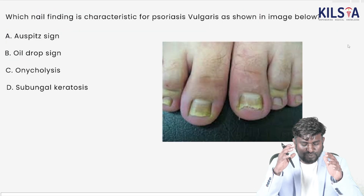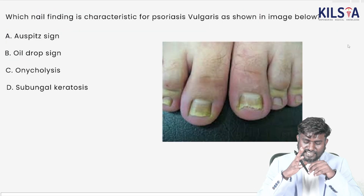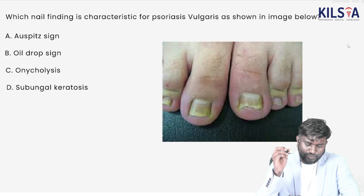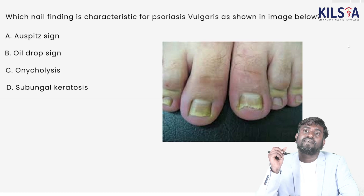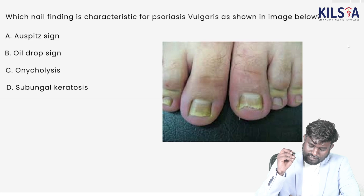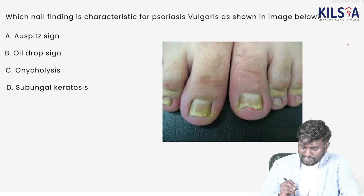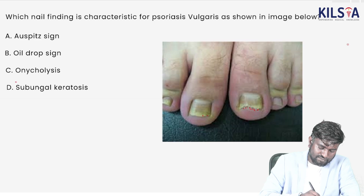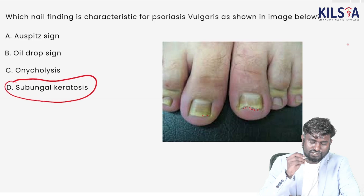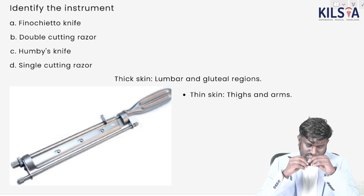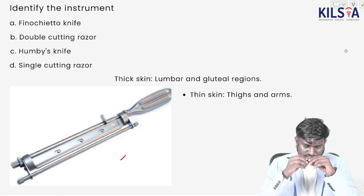An exam question asks: which nail finding is characteristic for psoriasis? The options are Auspitz sign, oil drop sign, onycholysis, or subungual keratosis. The answer is subungual keratosis — when you see skin cells accumulating under the nail bed, that is subungual keratosis.